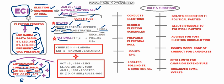At the national level, ECI operates in a one-plus-two setup: one Chief Election Commissioner, currently Sunil Arora, and two Election Commissioners — Rajiv Kumar and Sushil Chandra.